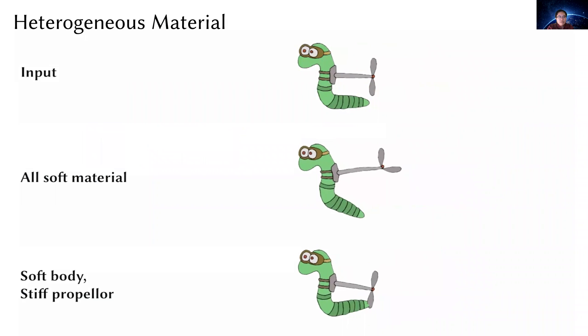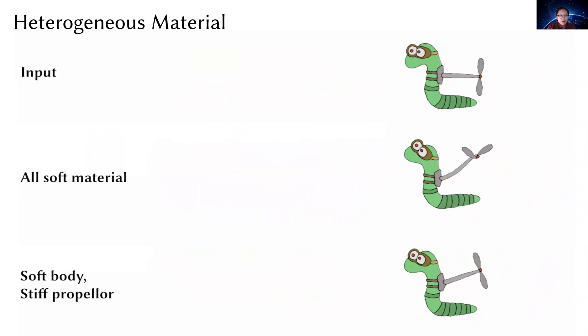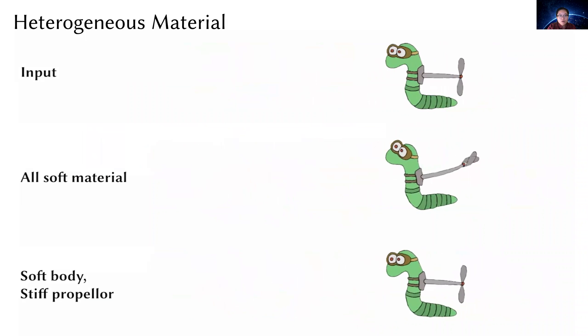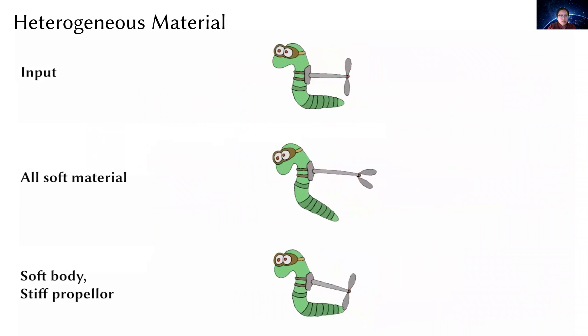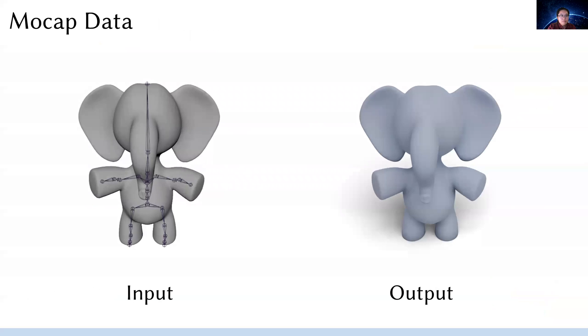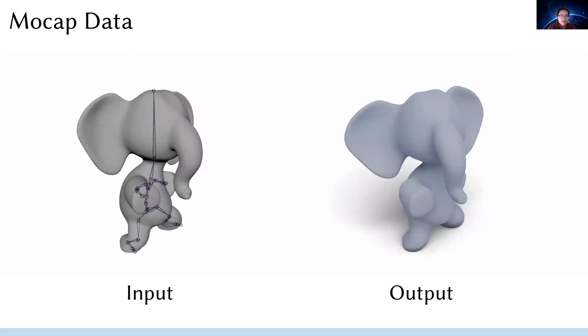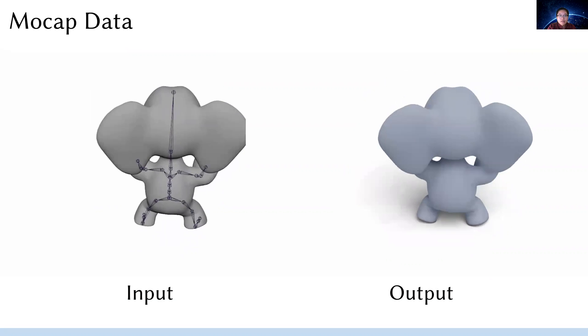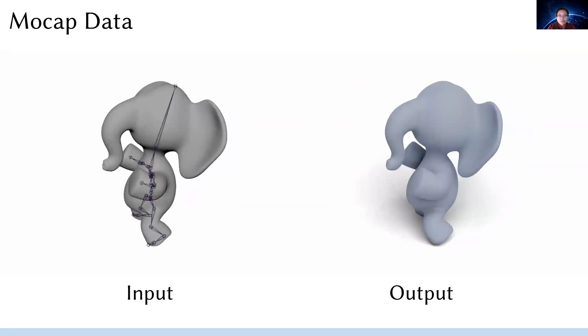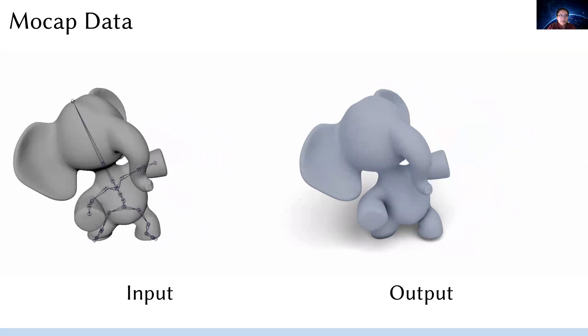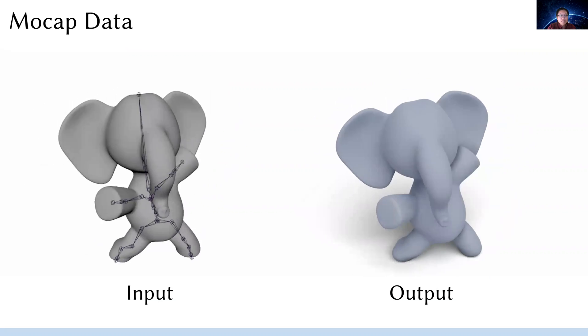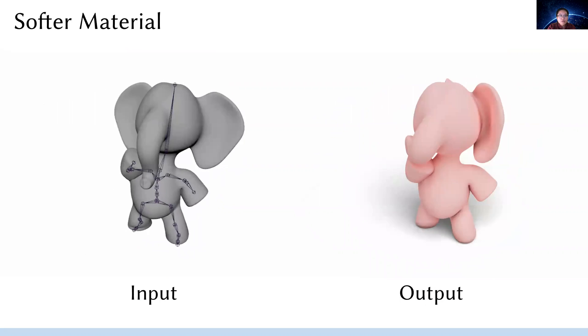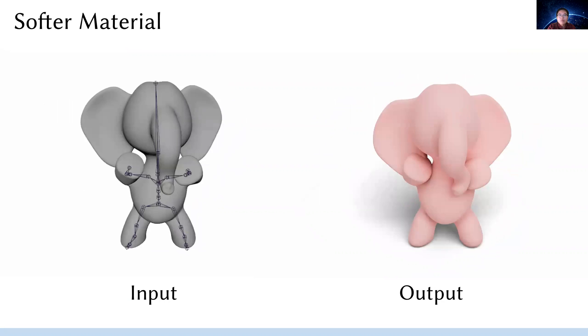We also show adding an additional constraint doesn't affect the ability for material editing and handling contact with the environment. Our method inherits advantages of whichever elasticity model it is plugged into. Material parameters can be controlled just like a full-space simulation. We also test our method on motion capture data. A motion capture sequence controls a skeleton rig inside an elephant. The trunk and ears are not articulated by the skeleton, so freely receive lively secondary effects. Here is the same model with softer material, it's even more energetic.